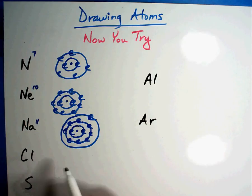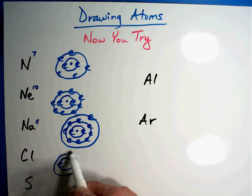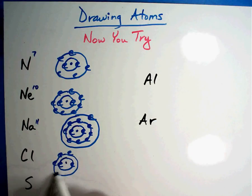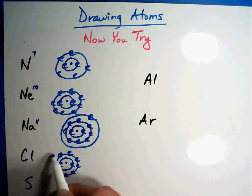Chlorine. Element seventeen. One, two. One, two, three, four, five, six, seven, eight. Eight and two is ten.